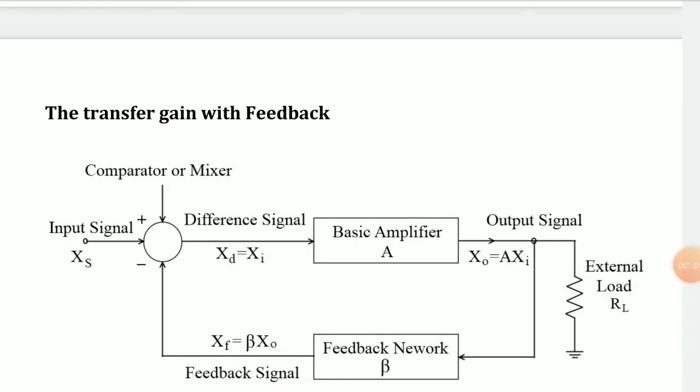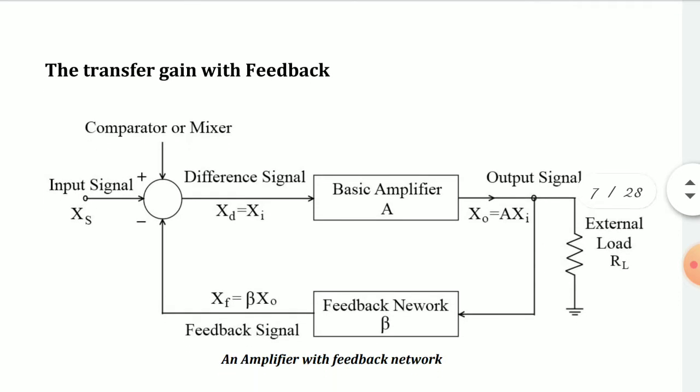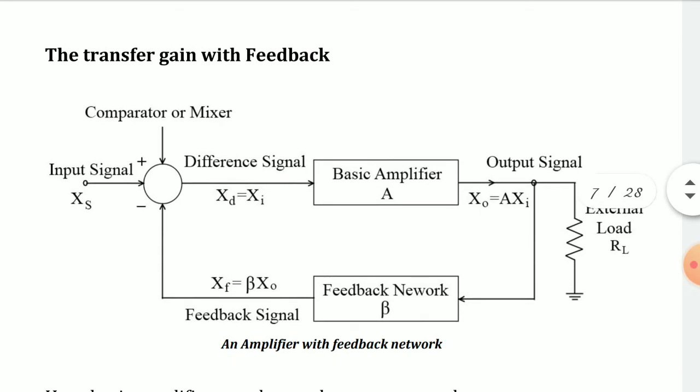We are going to start with a small derivation for the transfer gain with feedback. This derivation can be asked along with the block diagram of a feedback amplifier. This is the modified version of the block diagram of a feedback amplifier, where the basic amplifier and feedback network are shown.